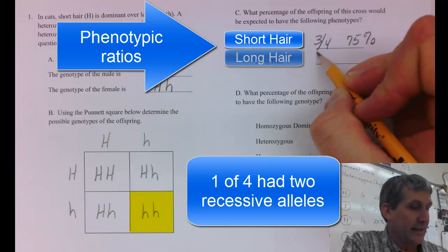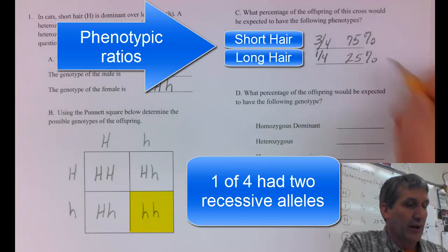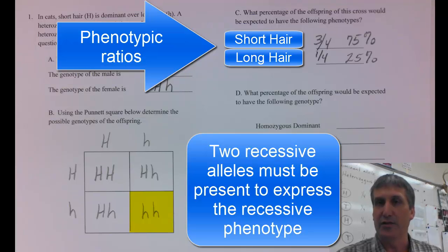25% of the time, one out of four, the offspring are going to be expected to express the recessive trait, which in this case is long hair.